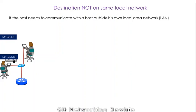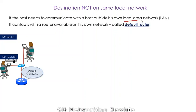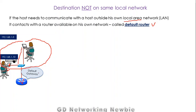But if the destination is not on the same local area network, what happens? If the host needs to communicate with a host outside the local area network, the operating system in that computer will decide that if the packet has to be transmitted to some other network — not on the local network — then that packet must always be sent to a default router. This router is known as the default router or default gateway.